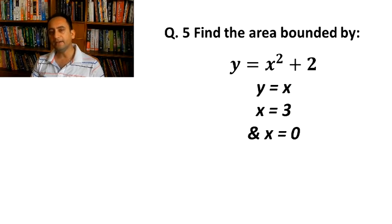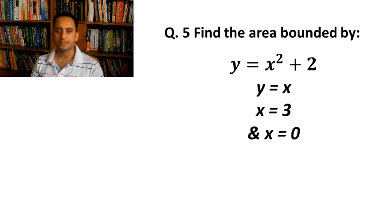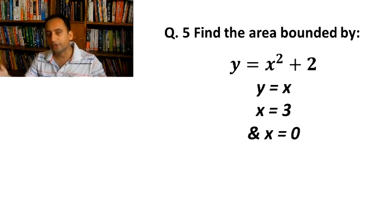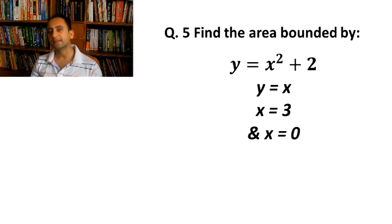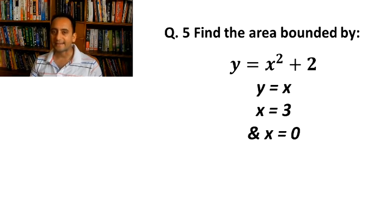Question number 5: Find the area bounded by y = x² + 2, y = x, x = 3, and x = 0. The first equation represents an upward parabola with vertex not at the origin — the parabola has been shifted two units above, so the vertex is at (0, 2). The second equation represents a straight line symmetric with respect to both axes. The third equation is a line parallel to the y-axis passing through x = 3, and the last one is the y-axis itself.